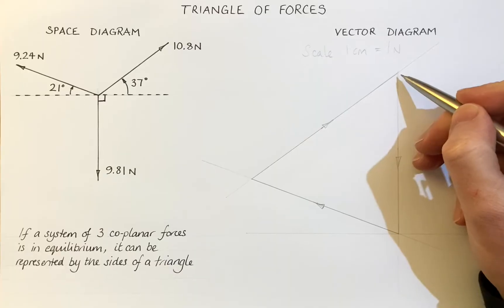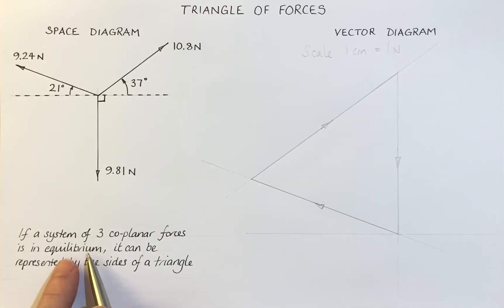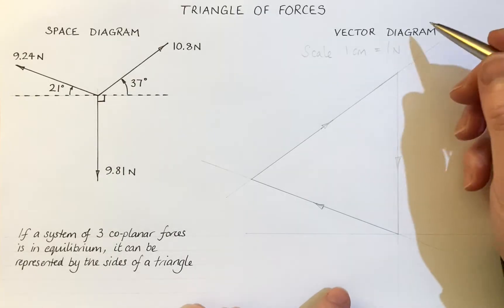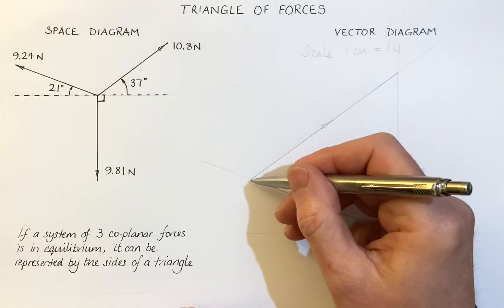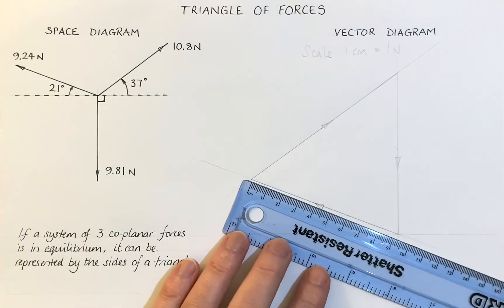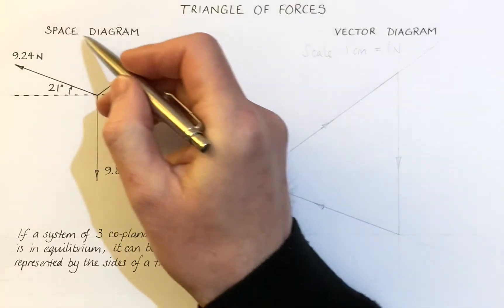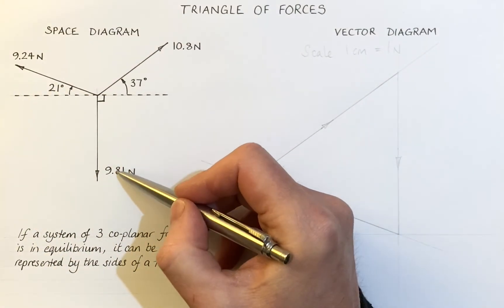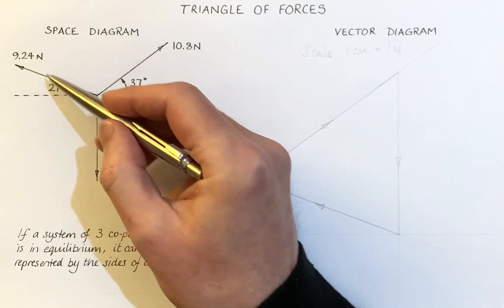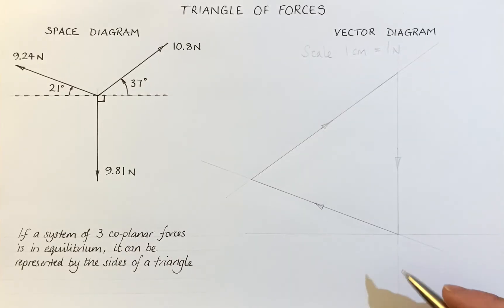A couple of reasons for it not joining up here. If you draw this triangle and it doesn't join up there, one of the reasons could be that the system is not in equilibrium. But it's more likely to be an error in your construction here, maybe not being accurate enough with your protractor or the length of the vectors there. Or it may be from the original information. It may be that these figures here aren't that accurate. But there we have our vector diagram.